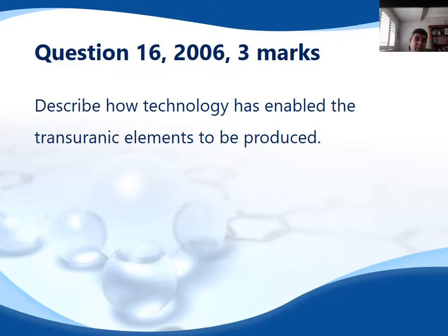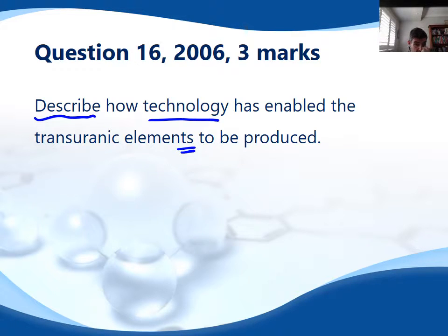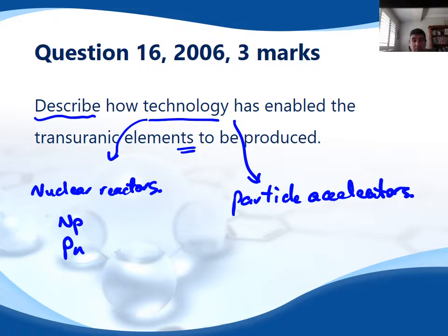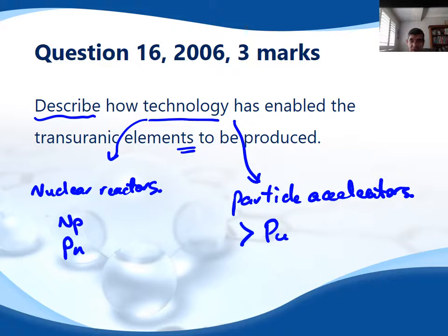So what sorts of questions are we likely to get for this topic? Here's one from 2006 worth three marks: 'Describe how technology has enabled transuranic elements to be produced.' This is a description question — what technology, and we want transuranic elements, so more than one. The best approach is to mention that the first transuranic elements were produced in nuclear reactors with an equation showing formation of neptunium or plutonium, plus the use of particle accelerators, with examples of elements beyond plutonium.